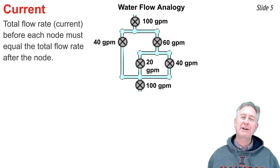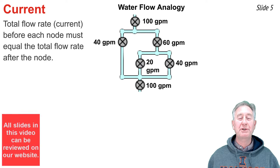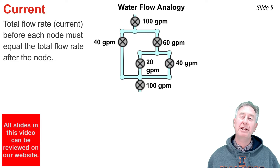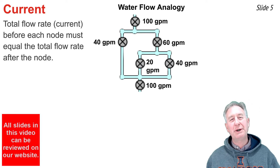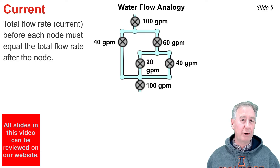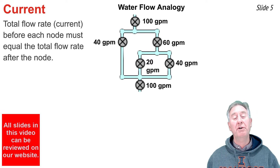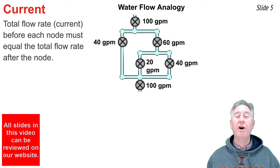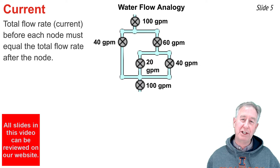Because of the branching that occurs in a parallel circuit, the concept of current can be a little tricky. But here's what you need to know: the total flow rate, or current, before every node is equal to the total flow rate after that node. I like to use a water flow analogy to explain.